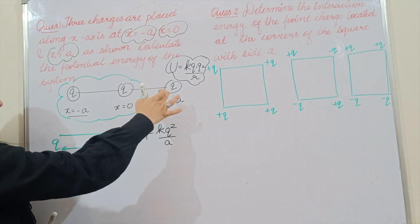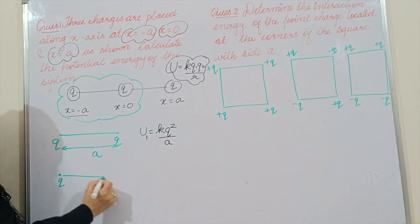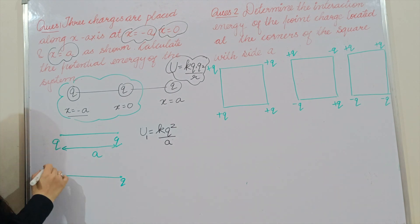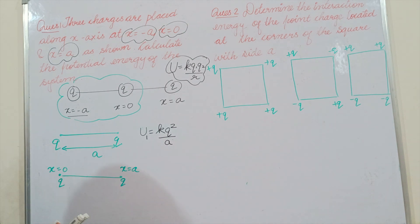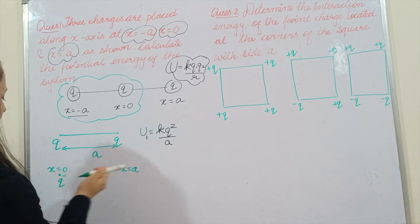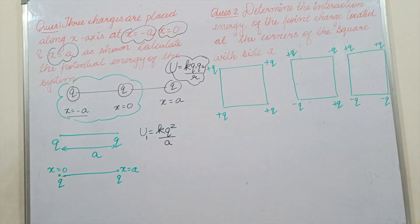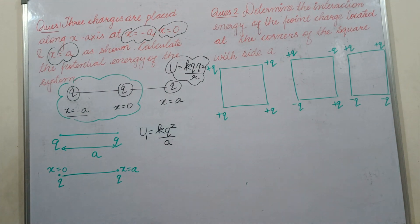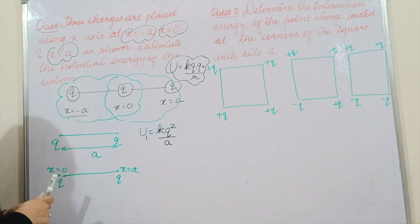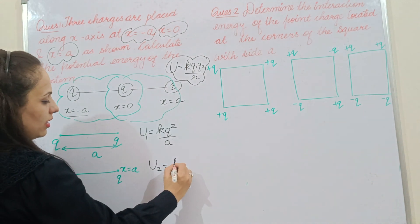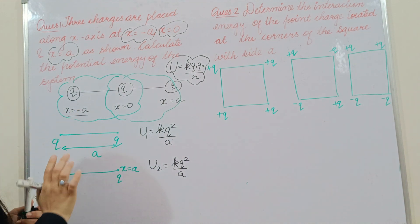The next pair is the charge at 0 and the charge at +a. One charge is at the origin and one charge is at x = a. The distance between them is again a. So the potential energy of the second combination, U2, equals kq²/a.